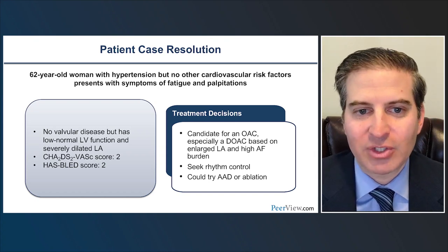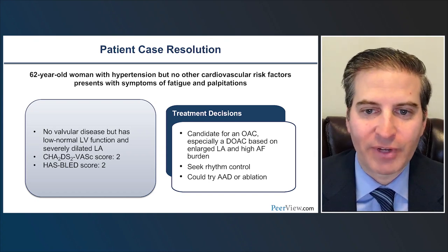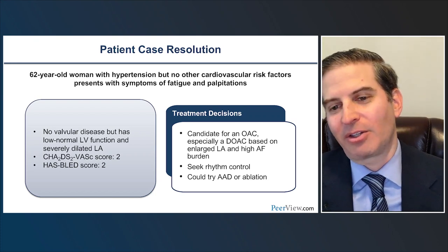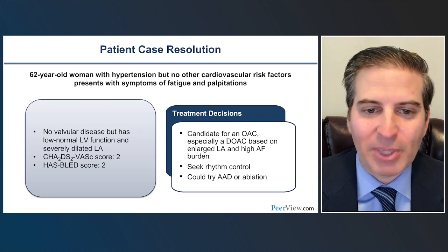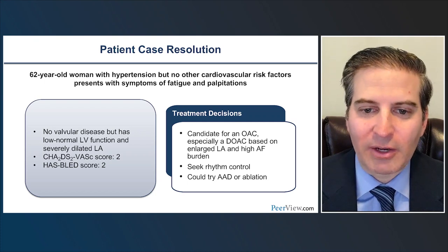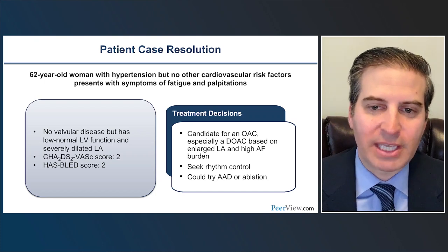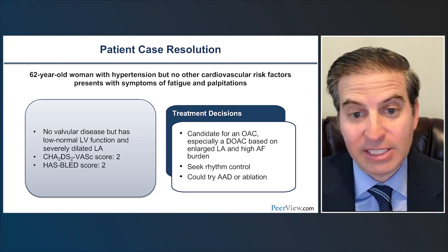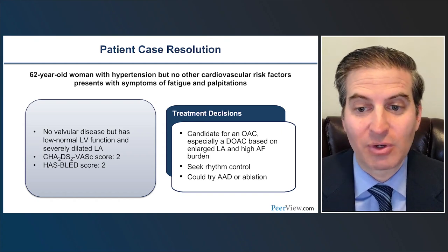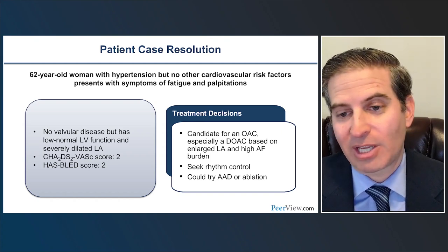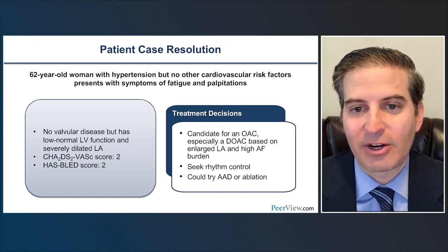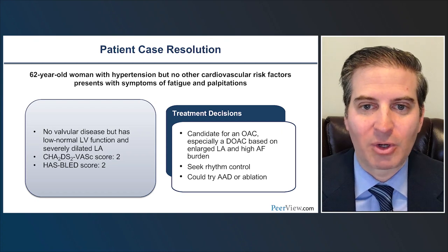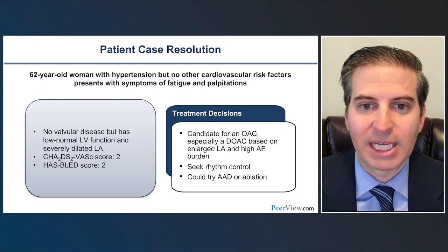NT-proBNP, left atrial size, and AFib burden are all useful tiebreakers when considering anticoagulation decisions. For patients at extremely high risk of bleeding or who have had previous serious bleeds and are also at high risk of stroke, we should certainly be considering left atrial appendage occlusion as another strategy to prevent stroke without increasing the risk of bleeding.